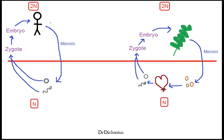Let's start with the human life cycle because you may be more familiar with this. The human creates their gametes through meiosis — this is the sperm and the egg. These fuse to form the zygote, and then the zygote multiplies to form the embryo, and the embryo multiplies to form the human. In the human life cycle there's only one multicellular body.